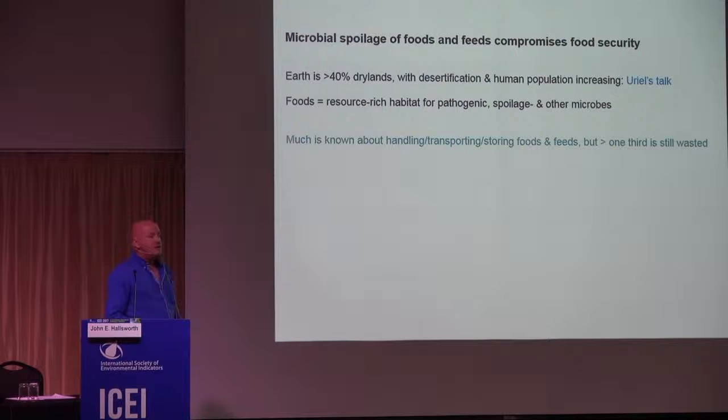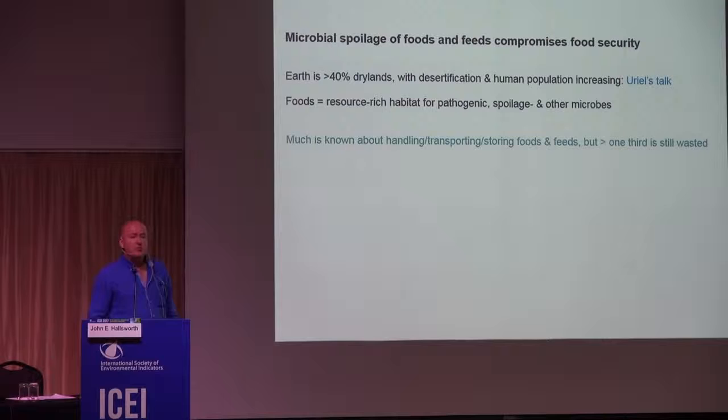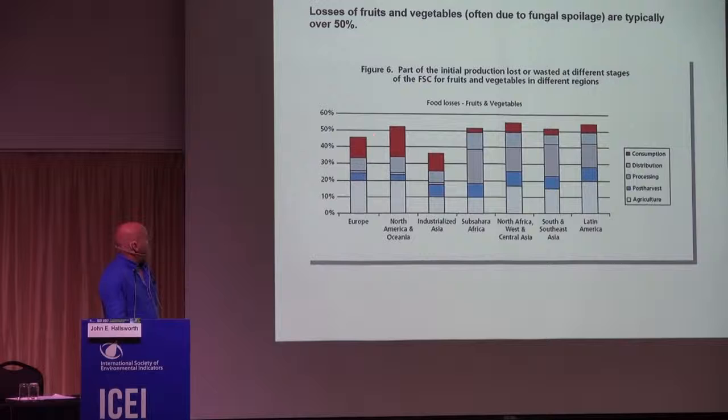Much is known about handling foods, transporting foods, storing foods and trying to preserve foods by various techniques. However, the fact remains that globally more than one-third of foods is still wasted. Fruit spoilage is a pressing issue, and in terms of fresh fruit and vegetables, typically about 50% of foods are wasted, and most of this is to do with fungal spoilage.